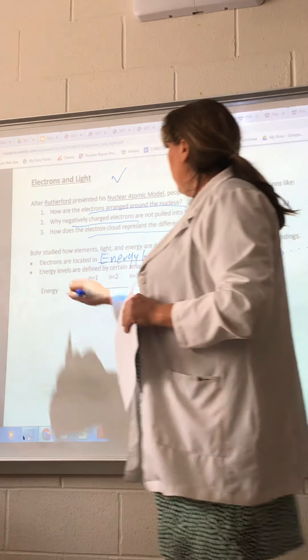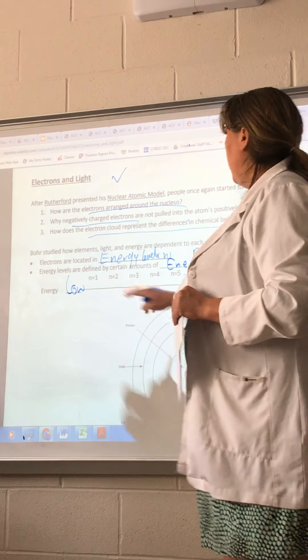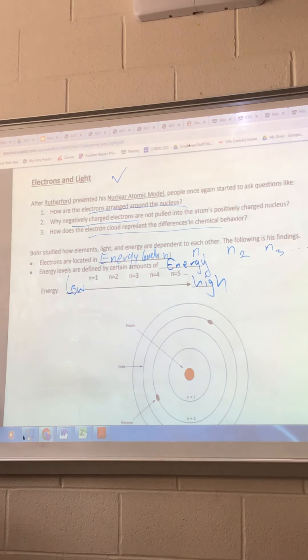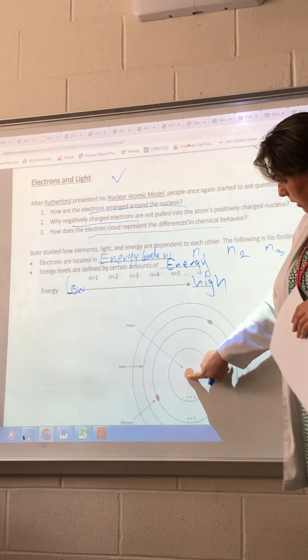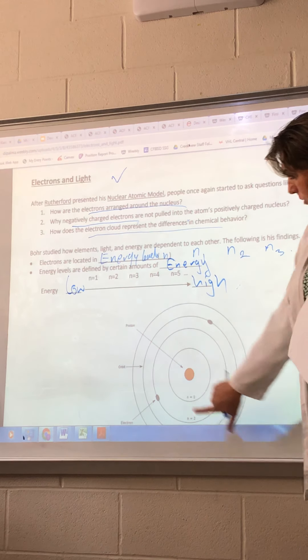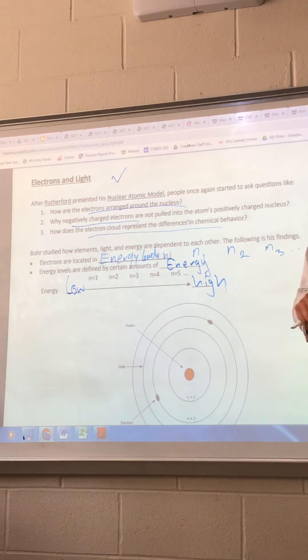So we go from low energy to high energy, N1, N2, N3, N4, N5. So N1 is the closest to the proton, to the nucleus, then N2. You see electrons going around and each electron is moving in an orbit.